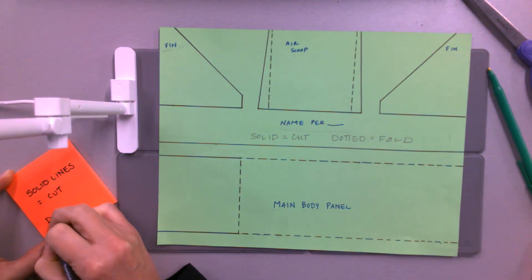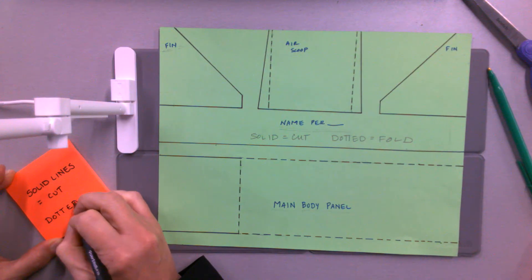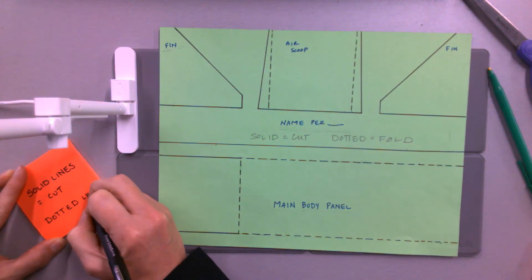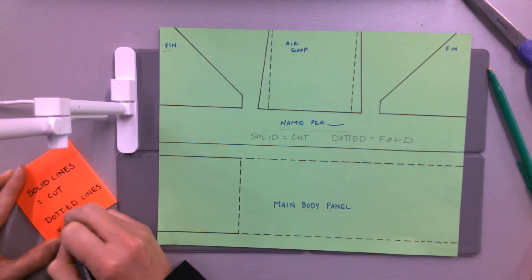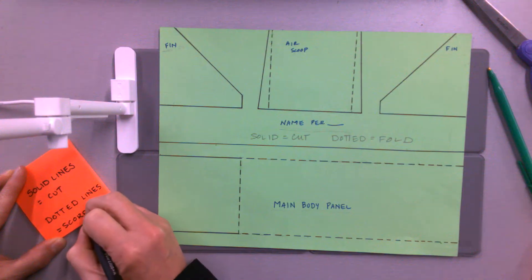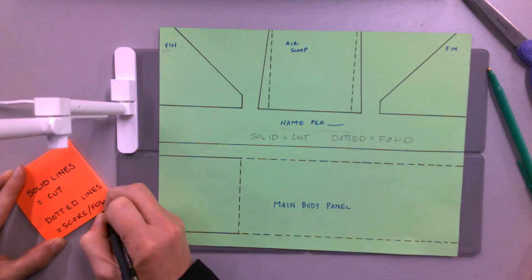The dotted lines you're not going to cut. You're going to fold those later. We're going to score them—it's called scoring and folding, and I'll show you how to do that.